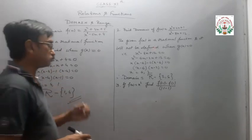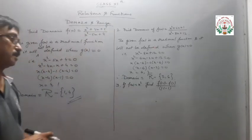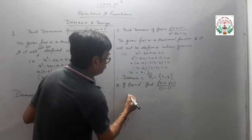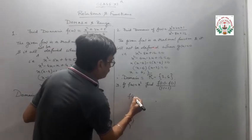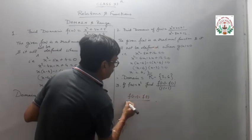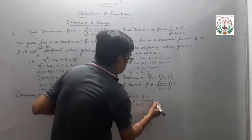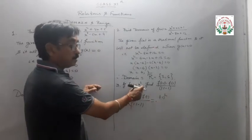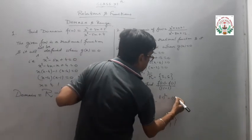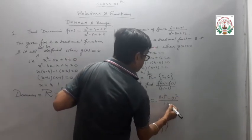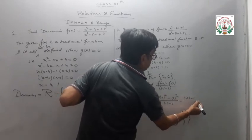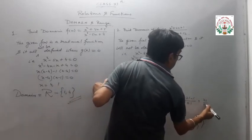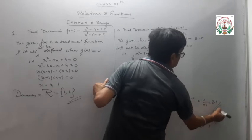Third question: if f(x) equals x squared, find [f(1.1) minus f(1)] divided by (1.1 minus 1). f(1.1) equals 1.1 squared equals 1.21, and f(1) equals 1 squared equals 1. So it becomes (1.21 minus 1) divided by (1.1 minus 1), which is 0.21 divided by 0.1, giving 2.1 as the answer.